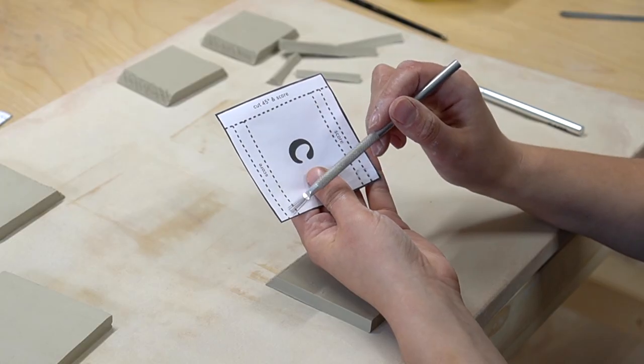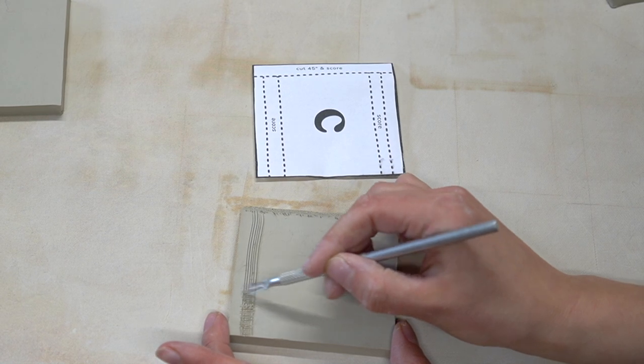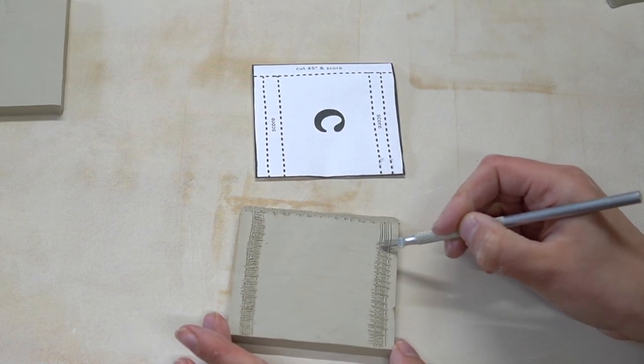Also you want to score the roof slightly away from the edge as the template indicates. This is because the roof hangs over a little bit which you will see shortly when we are assembling.